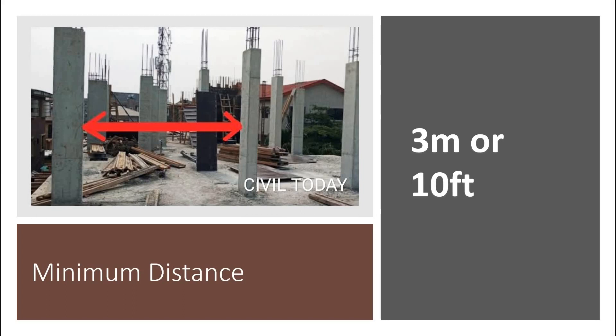If the distance between two columns is less than 3 meters, then the number of columns in the building increases. As the column number increases, the cost of the building also increases. So the minimum distance to be used is 3 meters or 10 feet.